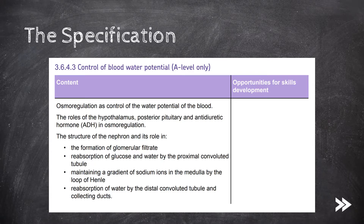First of all, we need to know that osmoregulation is the control of water potential of the blood. We need to know the roles of the hypothalamus, posterior pituitary gland and antidiuretic hormone, which can be shortened to ADH, in osmoregulation.